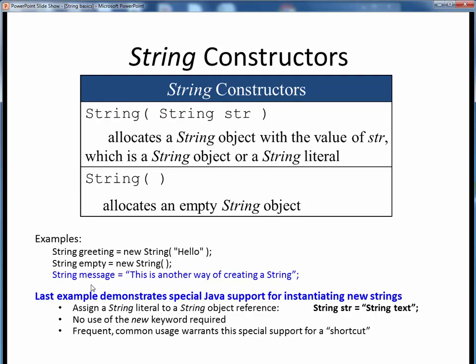The String class is notable in that it provides a special shortcut way of instantiating new String objects, without using the new keyword or a constructor, as we see here. We can simply declare a String object and set its value equal to whatever text we desire, as seen here.